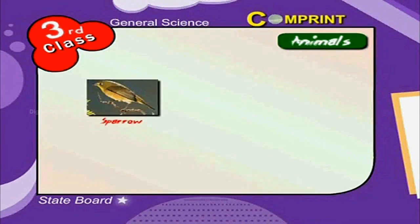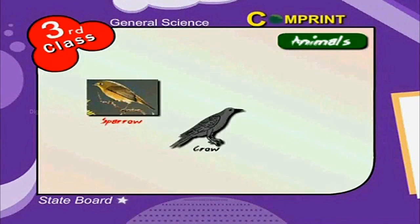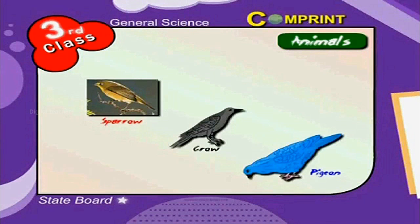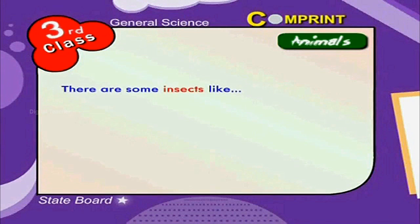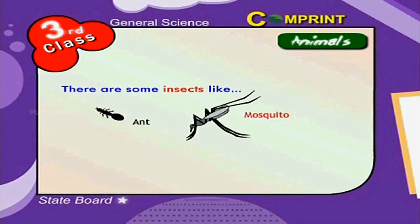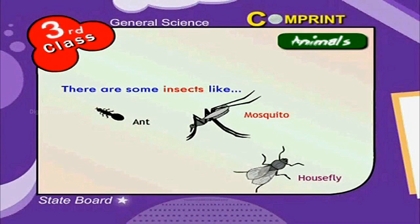Examples of birds include sparrow, crow and pigeon. There are some insects like ants, mosquitoes, house flies and butterflies.